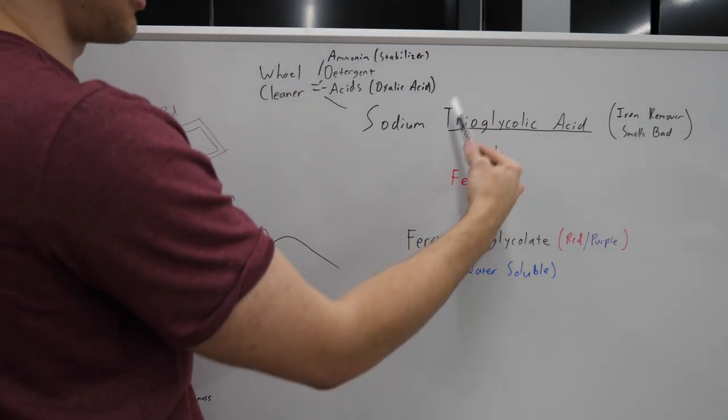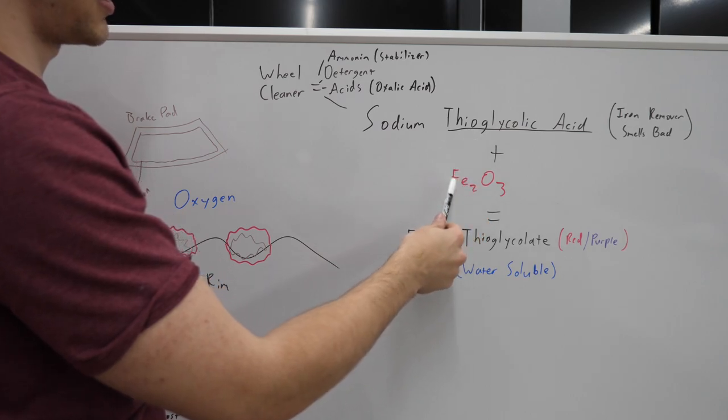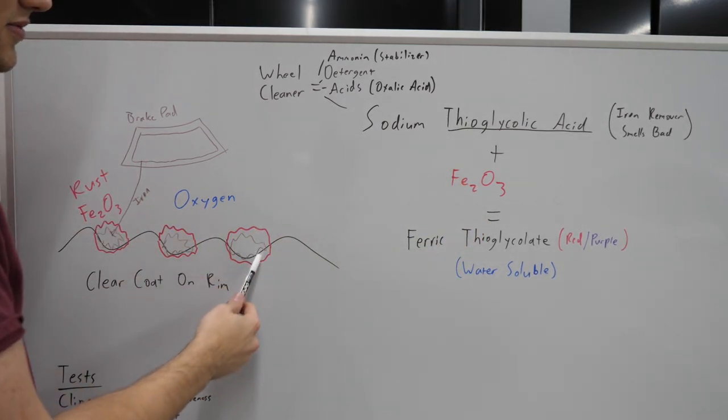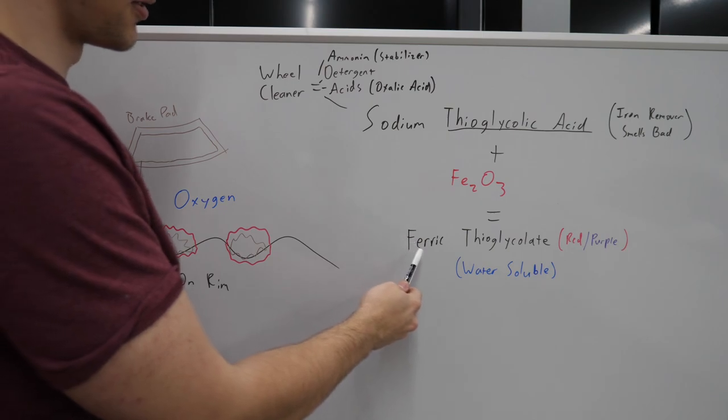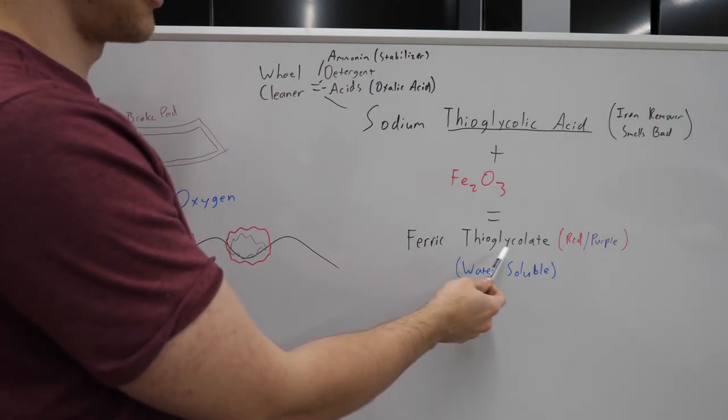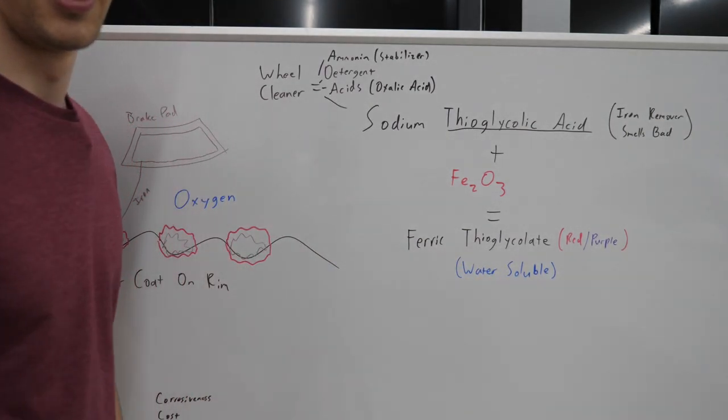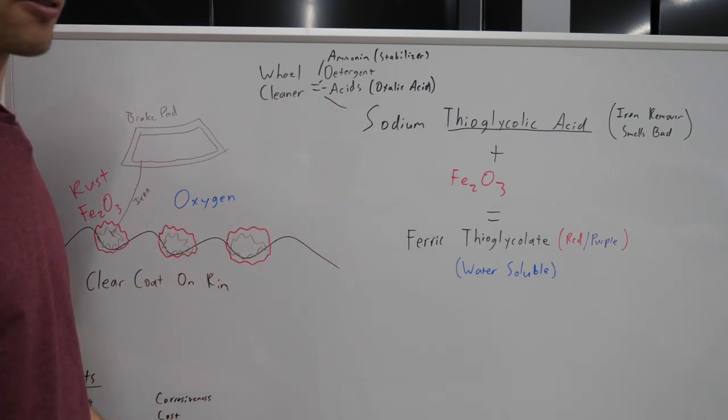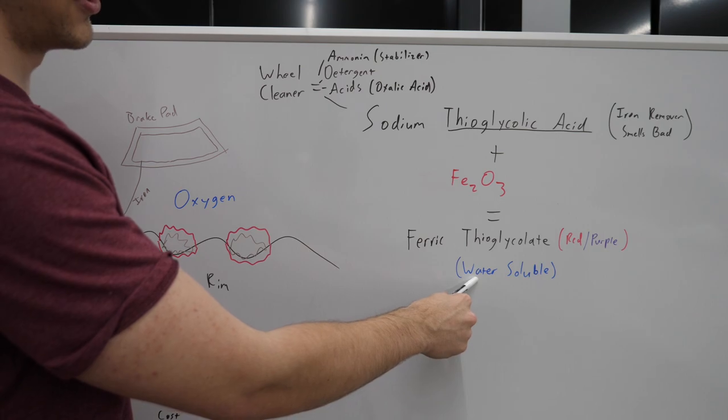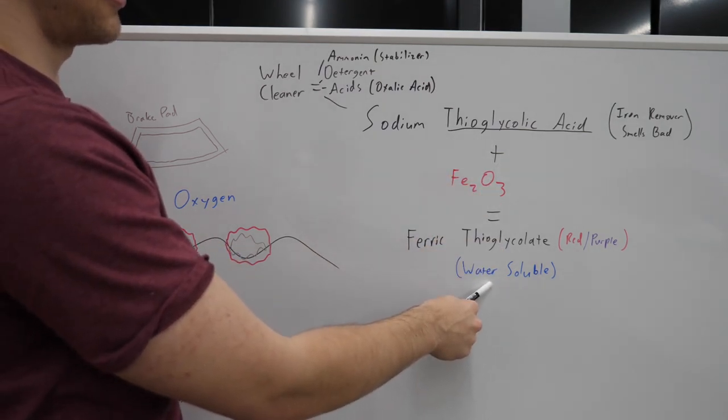Anyway, thioglycolic acid is what you need to react with the rust. So when this comes into contact with your rust here, you're going to form a ferric thioglycolate. Now this is the red purple, this is the bleed you'll see running down that everyone's looking for. And this is water soluble.